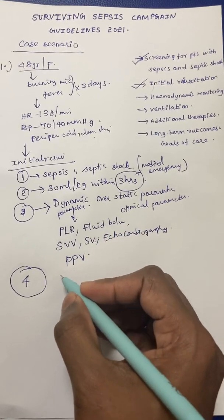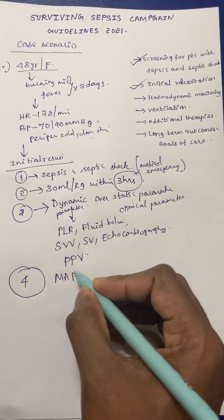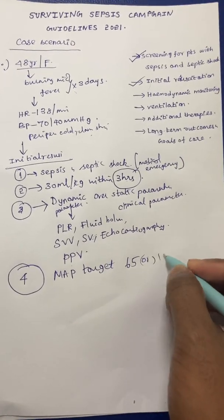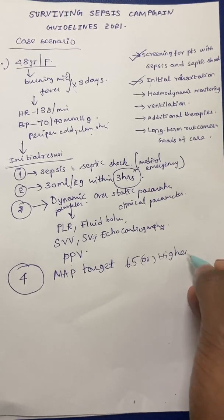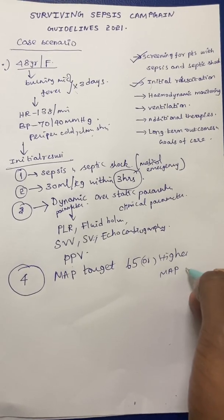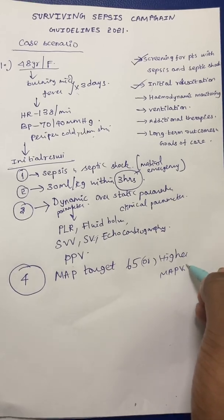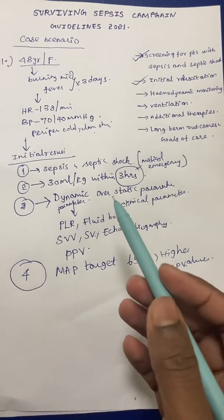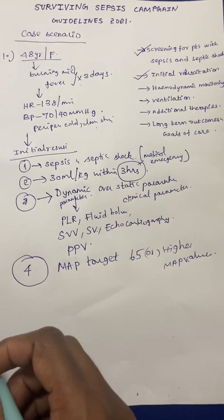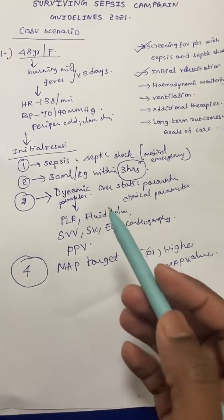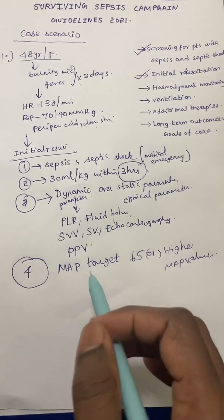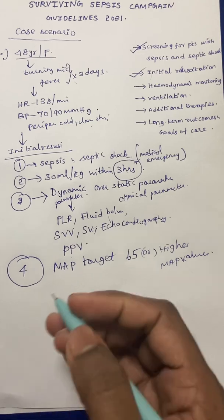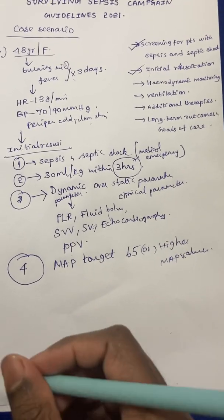The MAP target should be maintained at 65 mmHg or higher. MAP values have to be maintained in these patients. So once you have given fluids, you are assessing the parameters, and the MAP target is achieved at 65 mmHg.